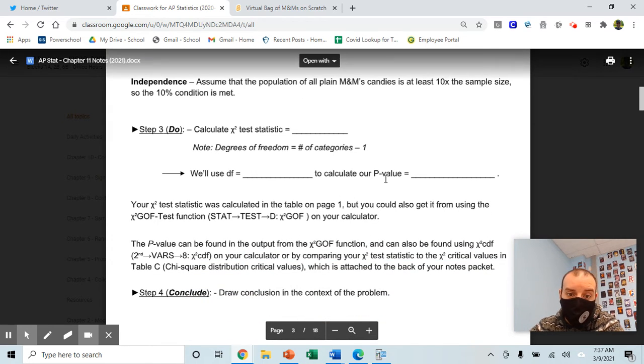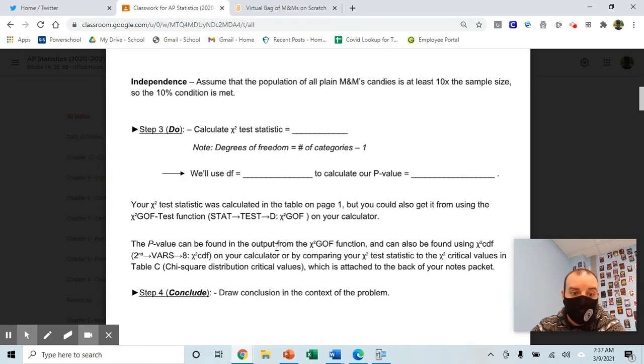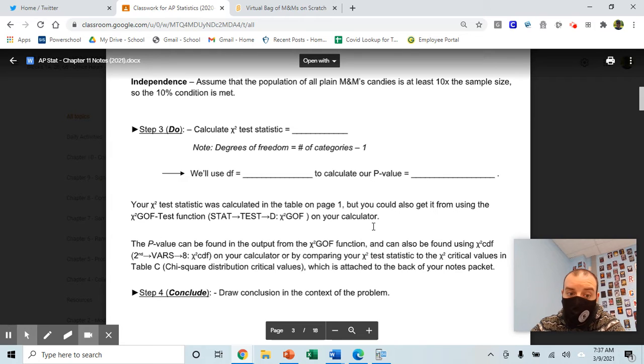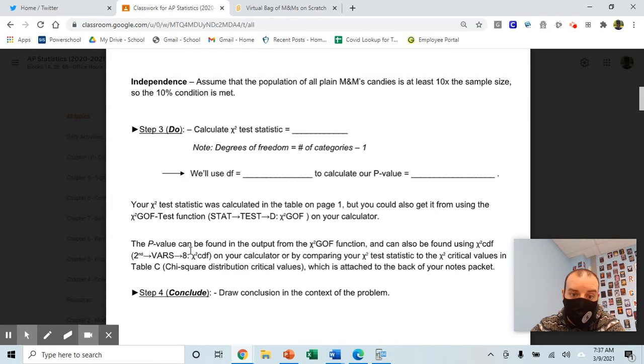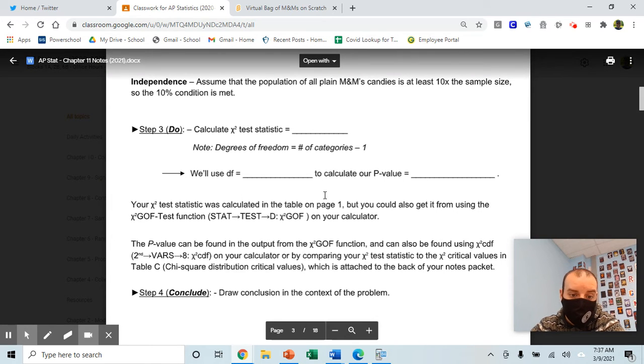You can run this test on the calculator as well. I want you to see how to go about doing it by hand, but you can also run it on the calculator. This is telling you how you can find the p-value on the calculator by using chi-squared CDF or to run the entire test on the calculator.